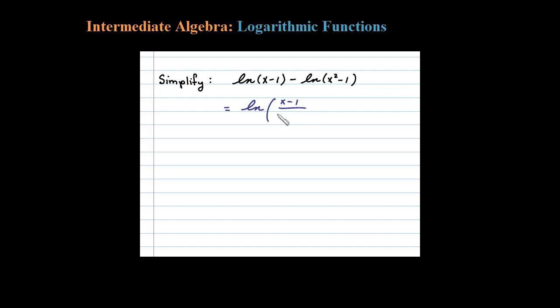So we have X minus 1 over X squared minus 1. Okay, so we've written it in terms of one logarithm. Now we can simplify the argument here.